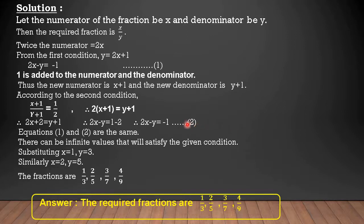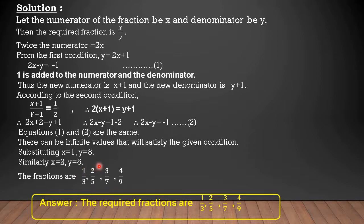You can observe that equations 1 and 2 are the same. Therefore, there can be infinite values that will satisfy the given conditions. By substituting X equals 1, we get Y equals 3. Similarly, if X equals 2, we get Y equals 5, and so on. Therefore, the required fractions are 1 by 3, 2 by 5, 3 by 7, 4 by 9, and so on.